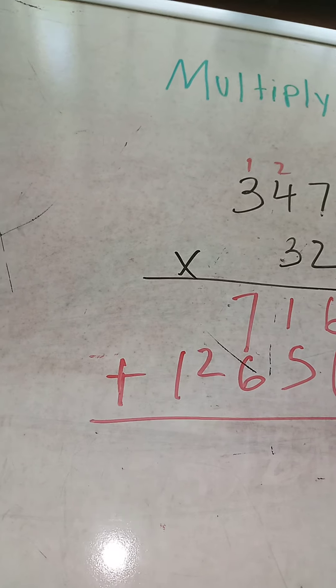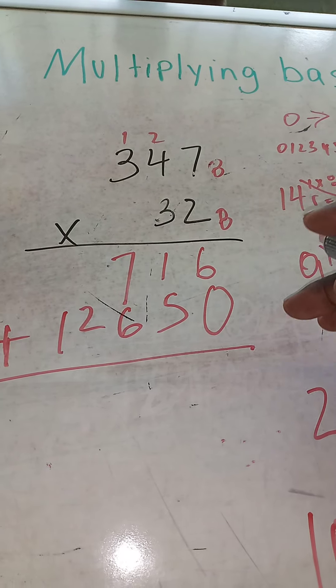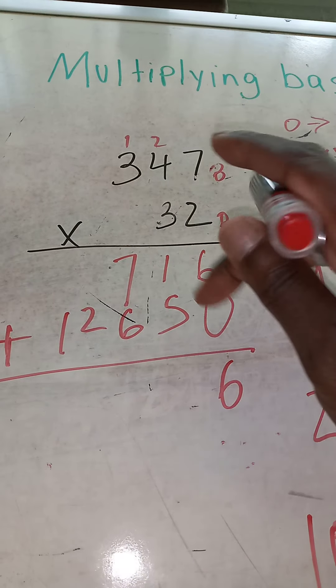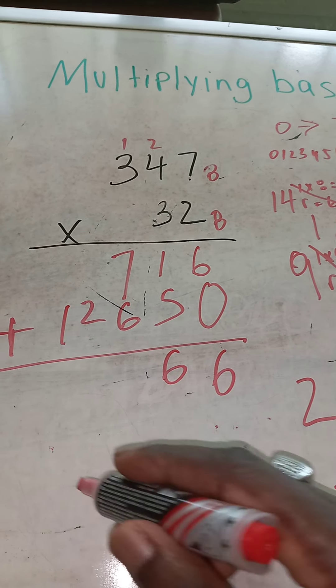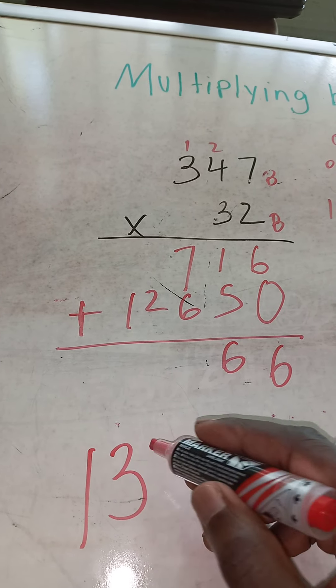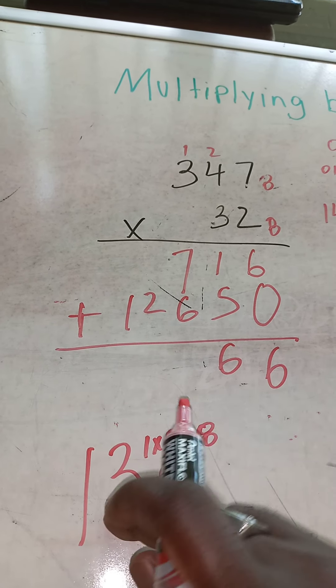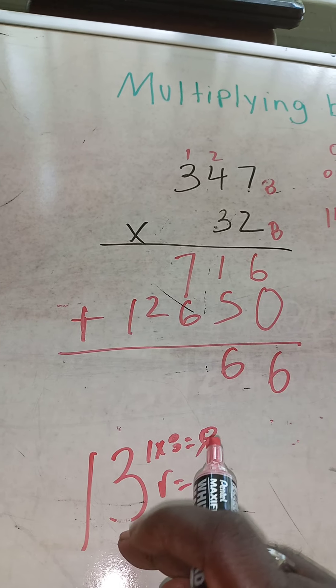Put back your operation. This time is addition, no longer multiplication. We're adding 6 and 0 is 6. 5 and 1 is 6. 7 and 6 is 13. How do we write 13? 1 times 8 equals 8, remainder 13 minus 8 gives you 5. 8 plus 5 equals 13.